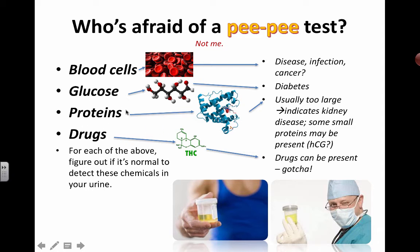Proteins are supposed to be too big, so they usually don't get through. Their presence indicates some kind of kidney disease. You may have some small proteins present — for example, HCG, which stands for Human Chorionic Gonadotropin — and that's usually present when you're pregnant. That's what pregnancy tests are actually testing for when you urinate on a stick and that little indicator shows up. This links to the disease unit where they talk about using monoclonal antibodies on pregnancy stick tests to find out if you're pregnant.